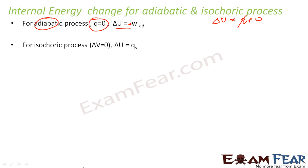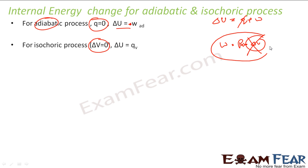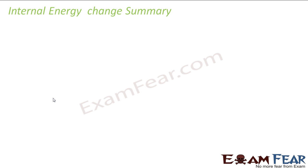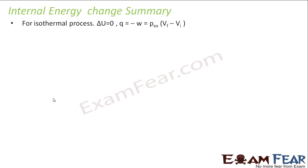For an isochoric process, volume is constant. Since work = P_external times delta V, and delta V = 0, work done is zero. So using delta U = Q + W, with W = 0, delta U = Q. The change in internal energy equals the heat supplied.